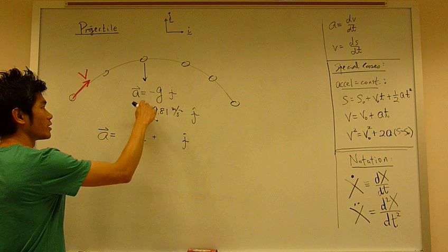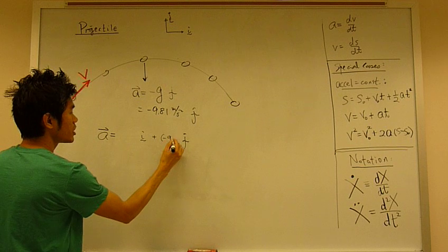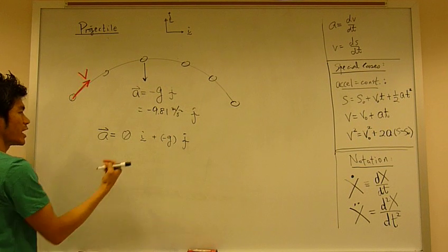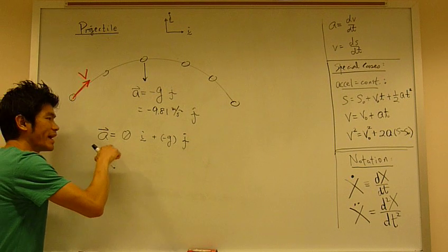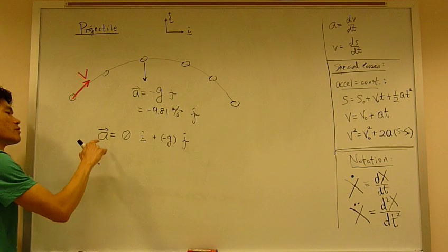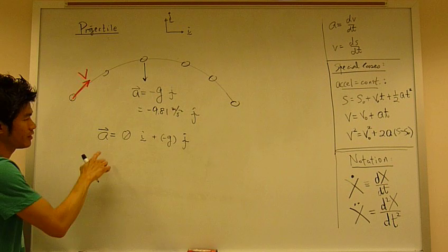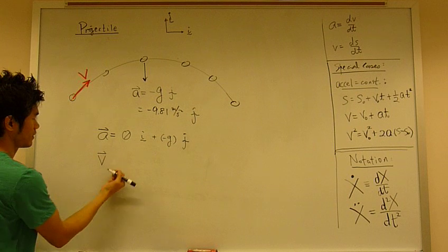With acceleration being constant in the j-direction, this is just negative g, and in the i-direction, it's zero. Now we have this equation for acceleration for projectile. From here, we can easily integrate to get velocity.